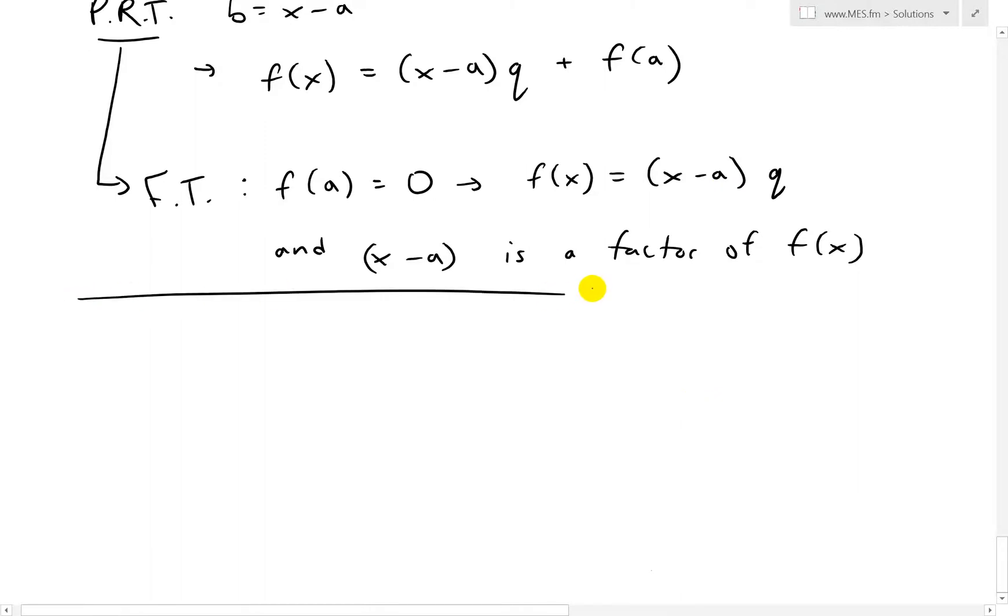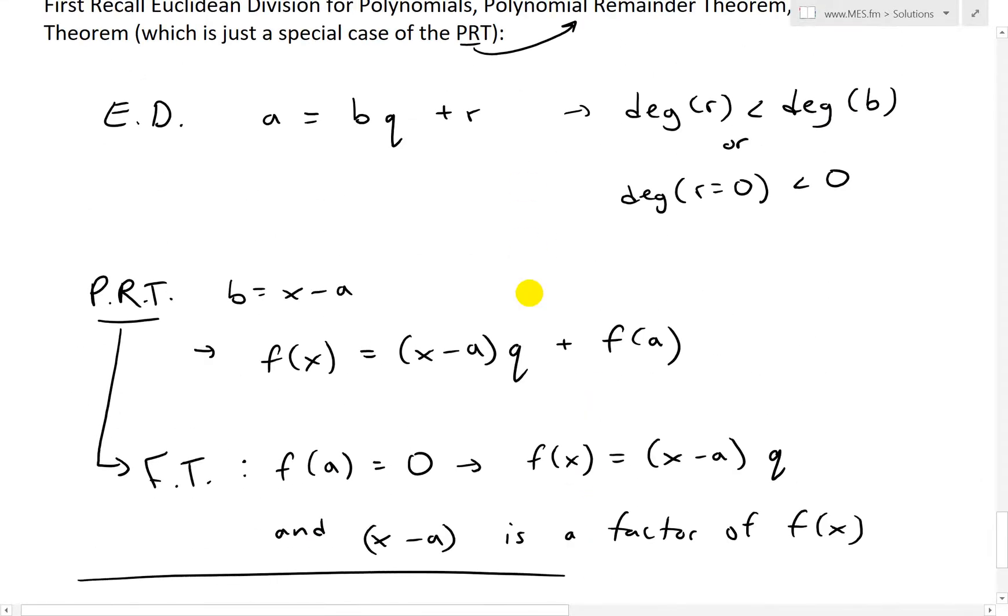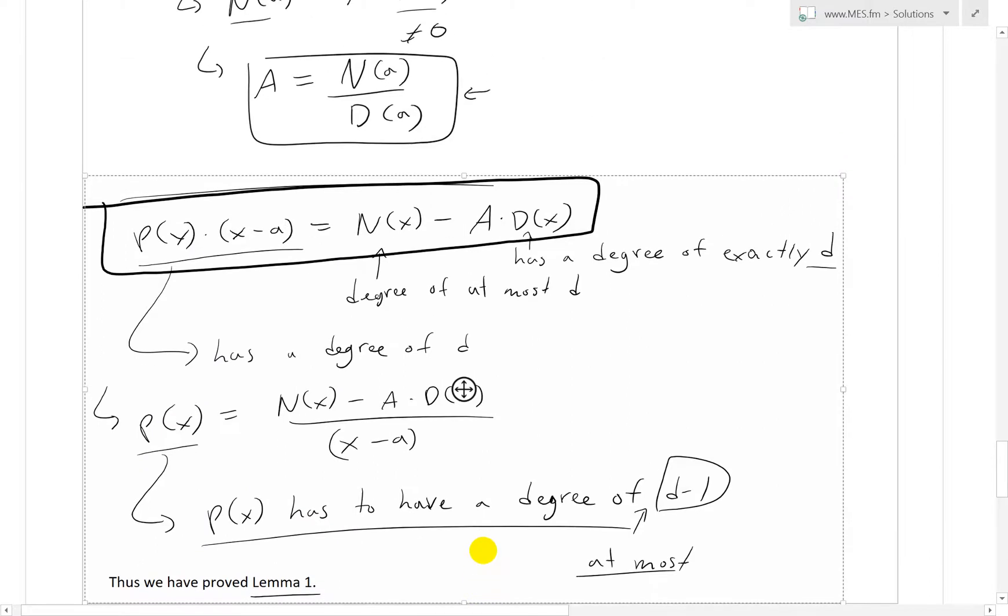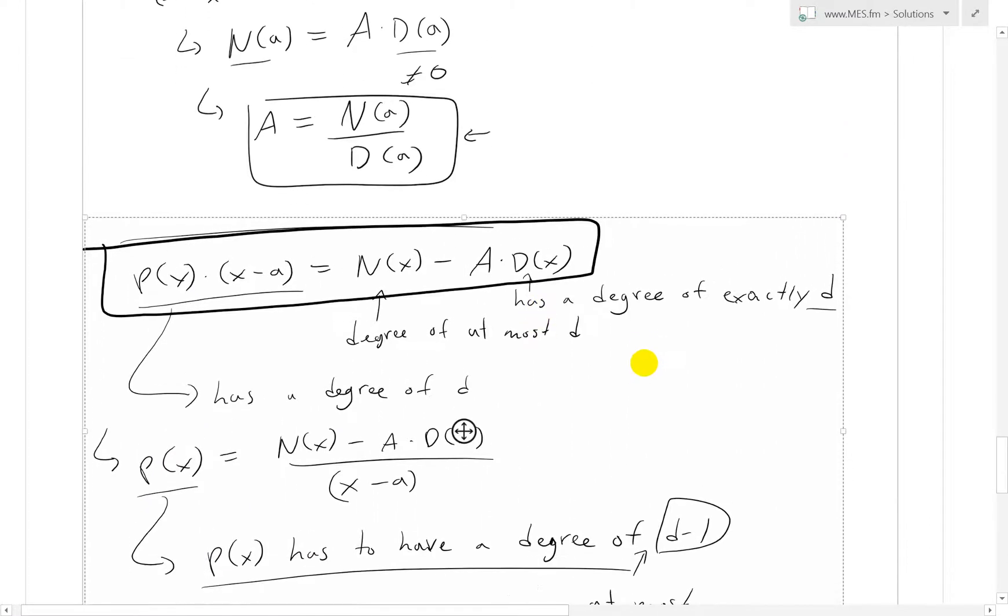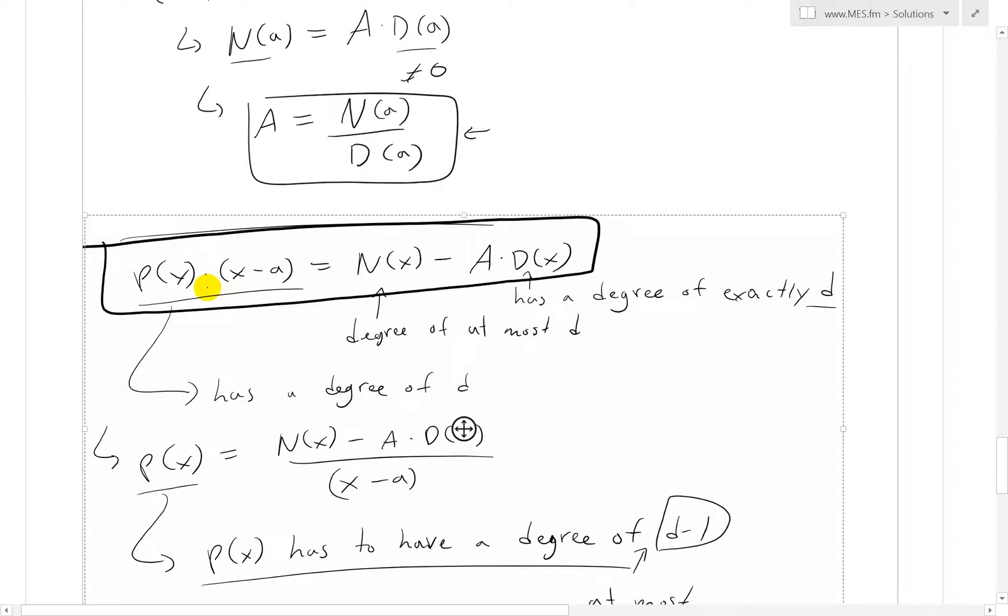So in our case, we can prove that P(x) is a polynomial by looking at the proof. Make sure to watch my earlier video to get caught up on how I went through this proof. So over here, P(x) times (X-A) equals N(x) - A*D(x). So I got to that point.